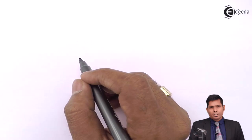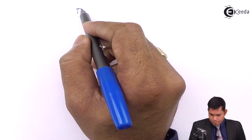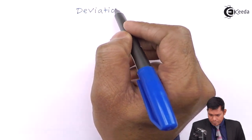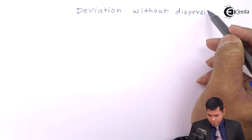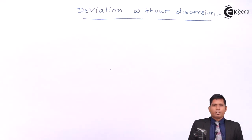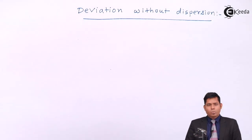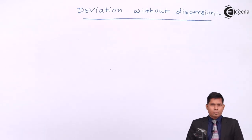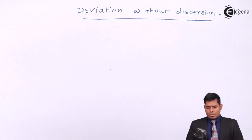Hello students, today we will discuss about deviation without dispersion. Let me tell you at the very outset that this is a very important concept — how we can have a ray of light that passes through a prism. Whenever a ray of light passes through a prism, it has to be dispersed, and there will be dispersion as well as deviation. There is no doubt about it.